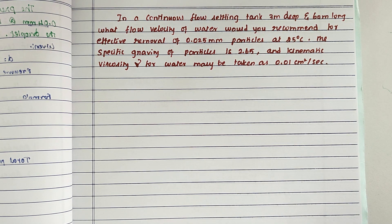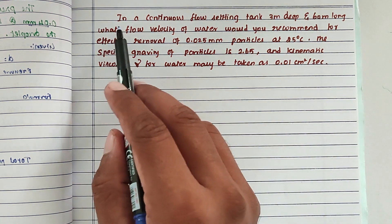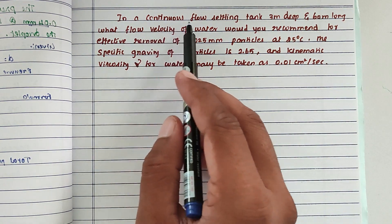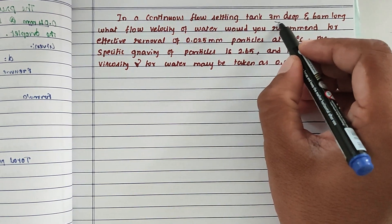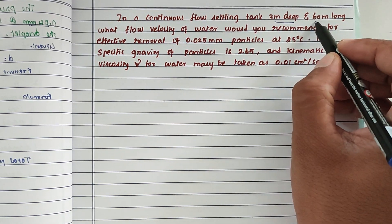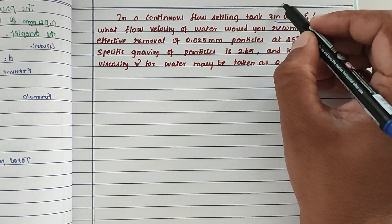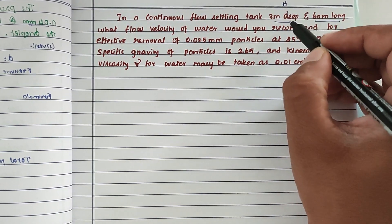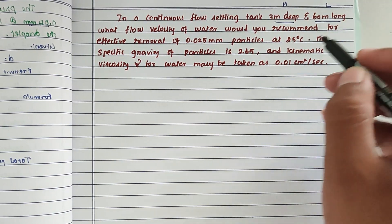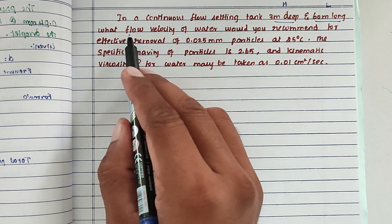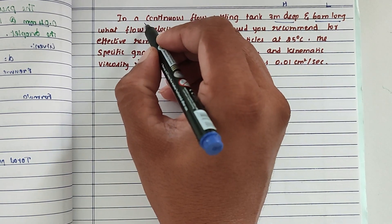Hello friends, welcome to Civil Engineering Exam. Today we are going to see a problem related to environmental engineering in the topic of settling tanks. The problem is: in a continuous flow settling tank, 3 meters deep and 60 meters in length, what is the flow velocity?